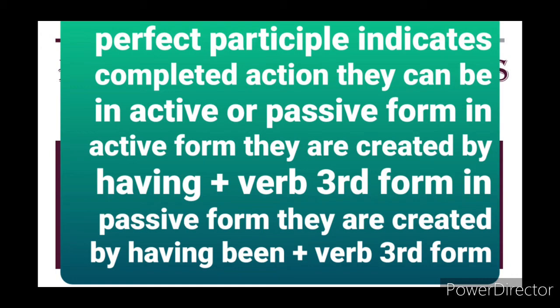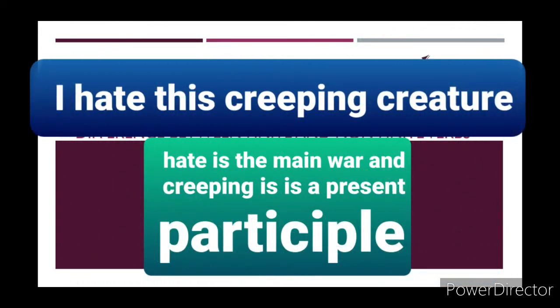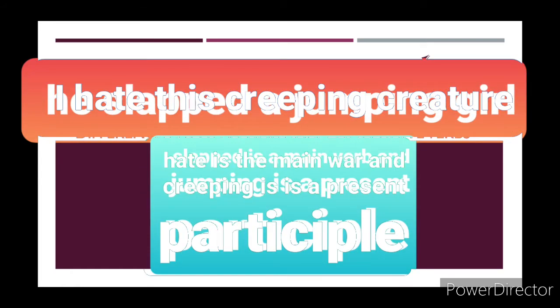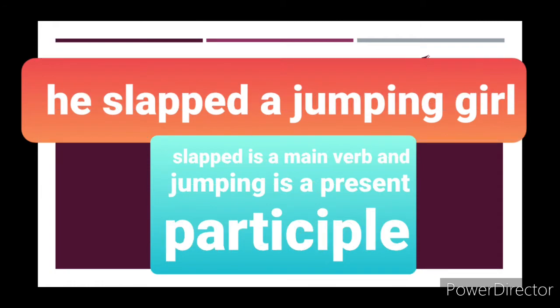Let us understand through examples. First example of present participle: 'I hate this creeping creature.' Here, 'hate' is the main verb and 'creeping' is the present participle. Next example: 'He slabbed to a jumping girl.' Here, 'slabbed' is the main verb and 'jumping' is the present participle.